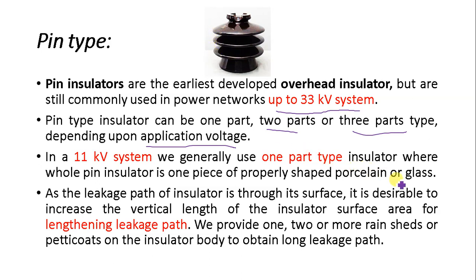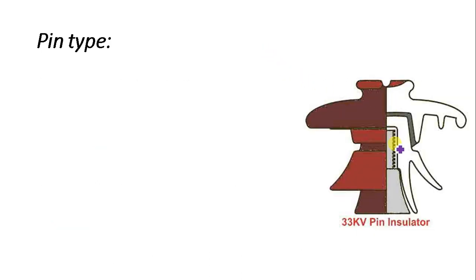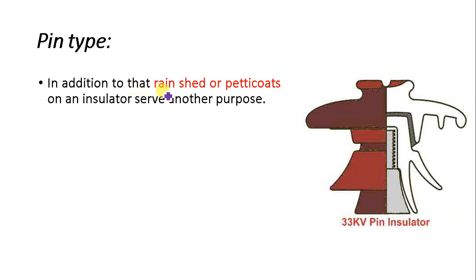Since the leakage path of the insulator is through its surface, it is desirable to increase the vertical length of the insulator to lengthen the leakage path. To achieve this, we provide one, two, or more rain sheets — also called petticoats — on the insulator body to obtain a longer leakage path. In the figure you can see one, two, and three rain sheets or petticoats.